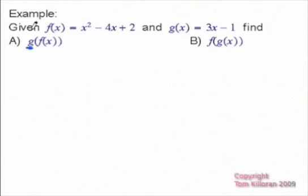You concentrate on the g function on the outside first. So we're going to write this as g of x is equal to 3 times something minus 1.